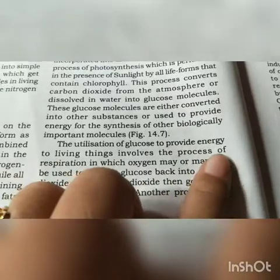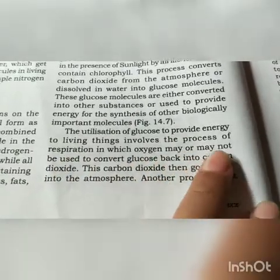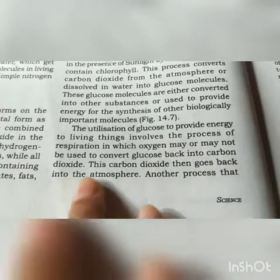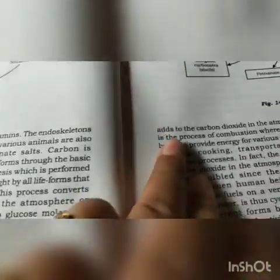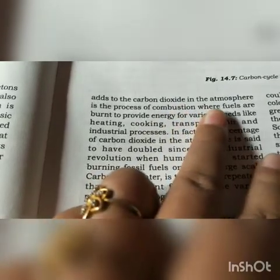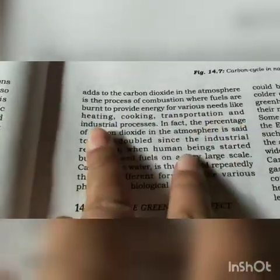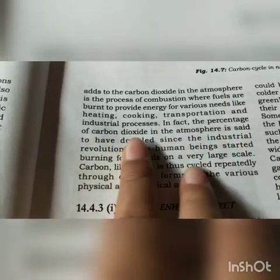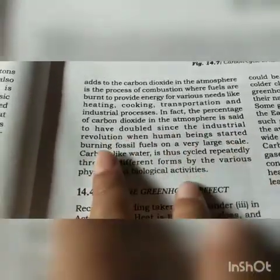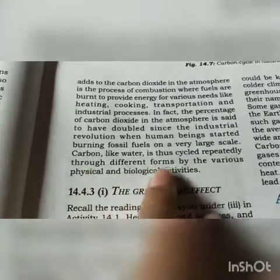The utilization of glucose to provide energy to living things involves the process of respiration, in which oxygen may or may not be used to convert glucose back into carbon dioxide. This carbon dioxide then goes back into the atmosphere. Another process that adds to the carbon dioxide in the atmosphere is combustion, where fuels are burned to provide energy for various needs like heating, cooking, transportation, and industrial processes.